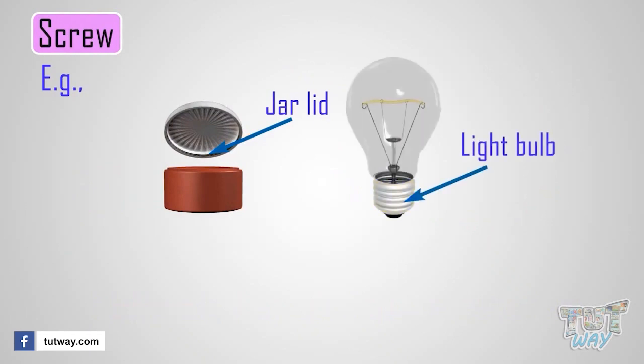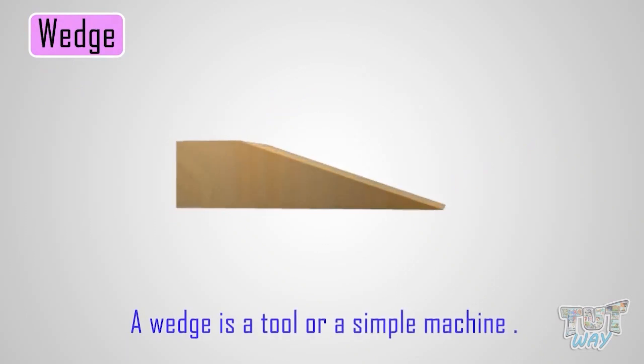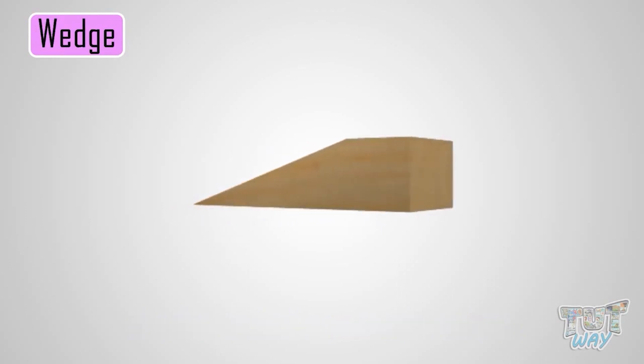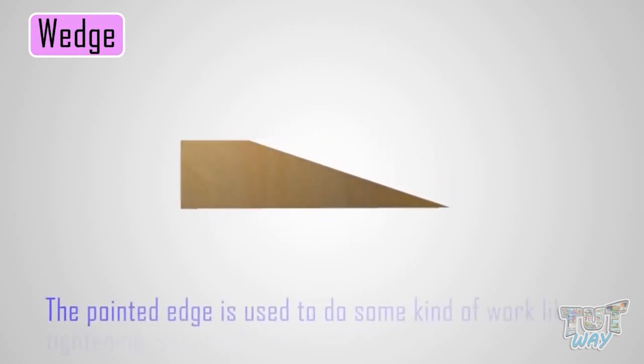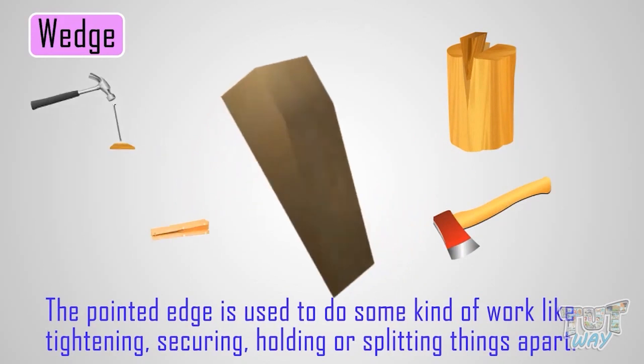Now let's learn another simple machine which is a wedge. A wedge is a tool or simple machine that consists of two inclined planes inclined at some angle making a pointed edge. The pointed edge is used to do some kind of work like tightening, securing, holding, or splitting things apart.